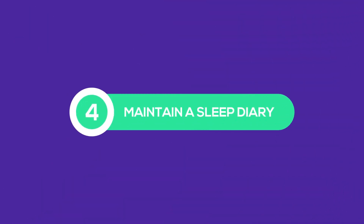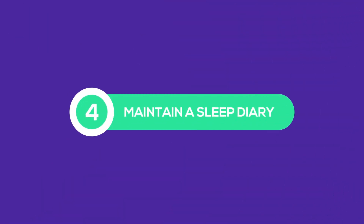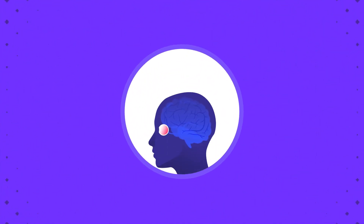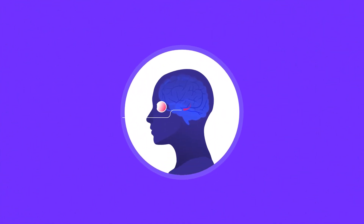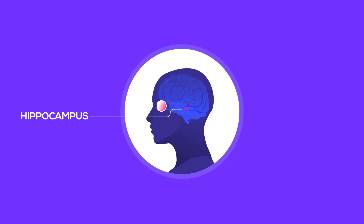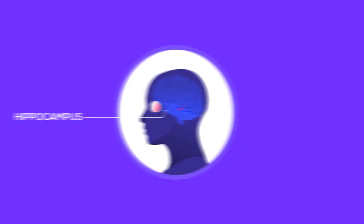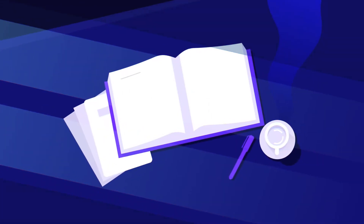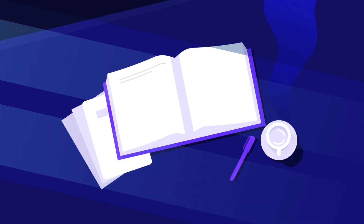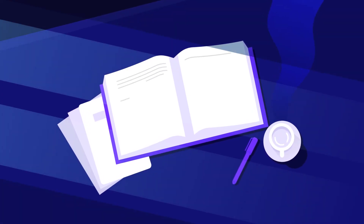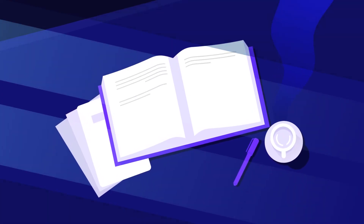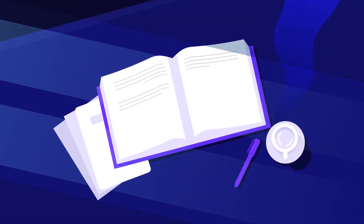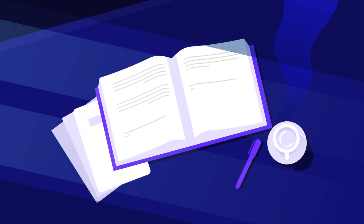Maintain a sleep diary. Since the hippocampus is partially inactivated during sleep, you tend to forget what you dream. Just after waking up, record what you saw in a diary. This will help your brain to register your dreams in long-term memory.